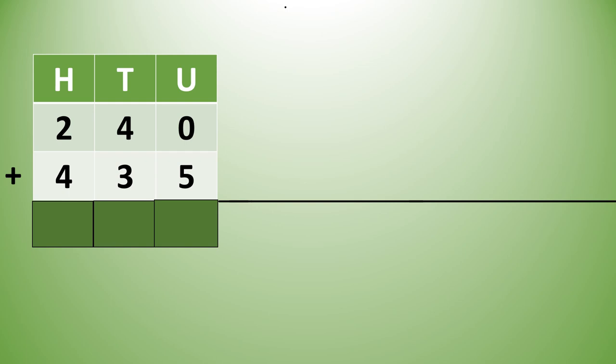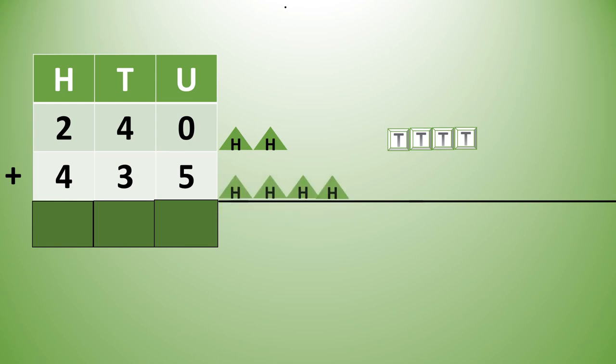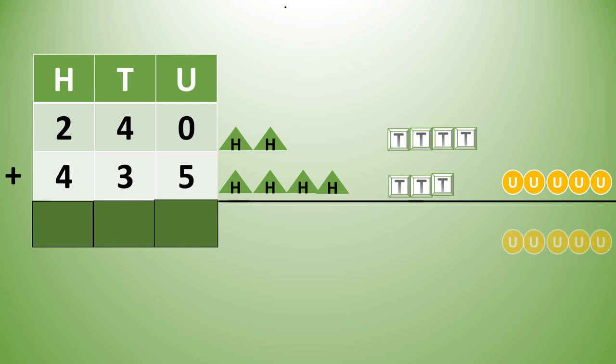240 plus 435. In 240 we draw 2 hundreds, 4 tens, 0 units. In 435 we draw 4 hundreds, 3 tens, and 5 units. Let us add the units place numbers first — 0 units plus 5 units will give us 5 units.